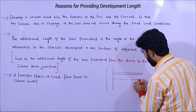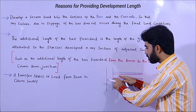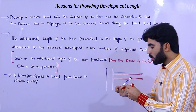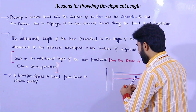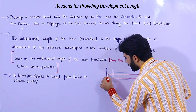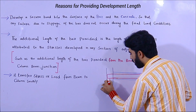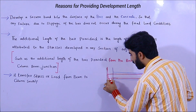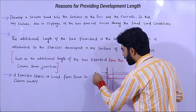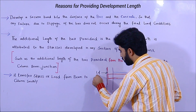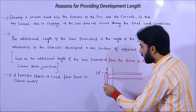Inside the beam we are using steel reinforcement — you can see compression and tension zones. When we join the steel reinforcement into the column, we provide an extra length or additional bar going downward, and the tension bar goes upward. This extra or additional bar is called development length, denoted as Ld.